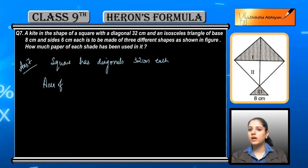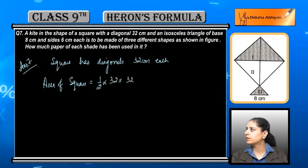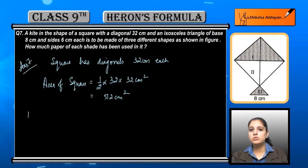So area of square is equal to half into 32 into 32, which is equal to 512 cm square. So area of square is 512 cm square.